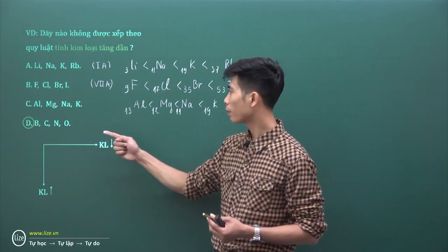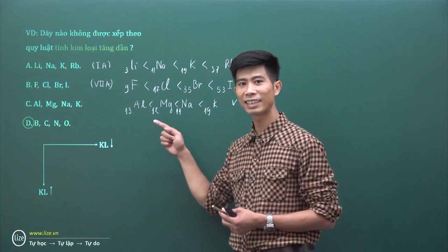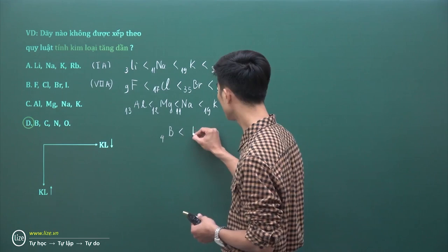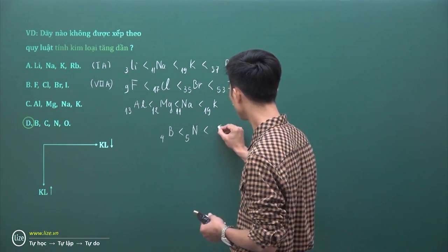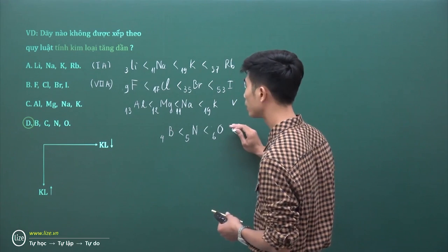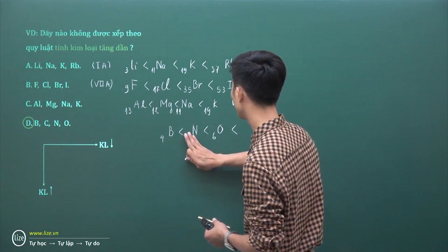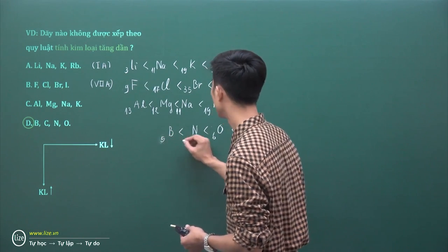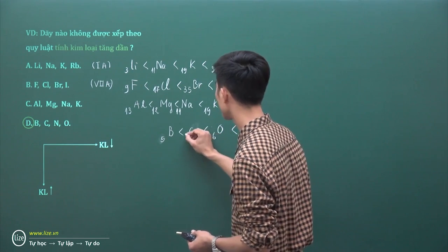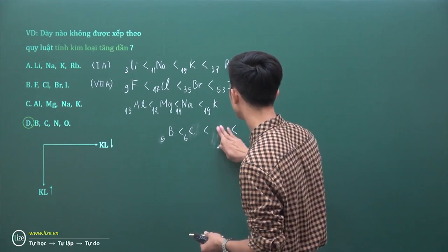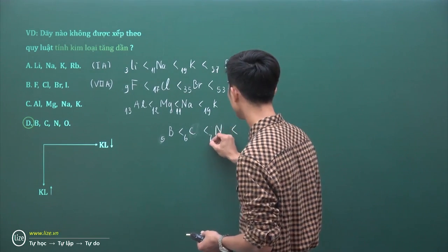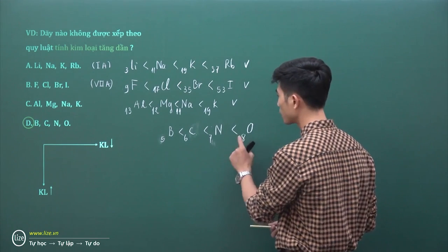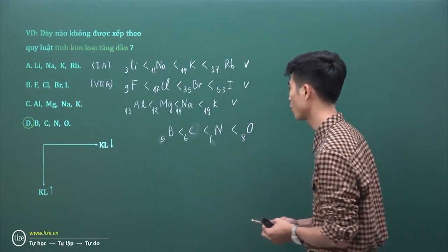Đáp án D gồm Bo, Carbon, Nitơ và Oxy - trong cùng một chu kỳ. Sắp xếp theo thứ tự: Bo Z=5, Carbon Z=6, Nitơ Z=7, Oxy Z=8 - theo chiều tăng dần điện tích hạt nhân. Mà trong cùng một chu kỳ, tăng dần điện tích hạt nhân thì tính kim loại giảm. Do đó đáp án D là đáp án sai - đây là dãy không được sắp xếp theo chiều tính kim loại tăng dần.